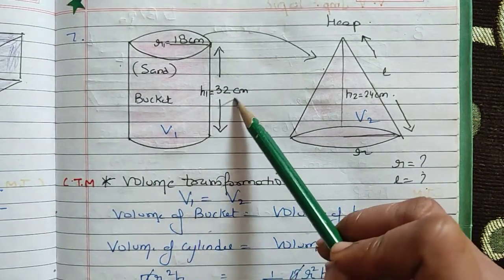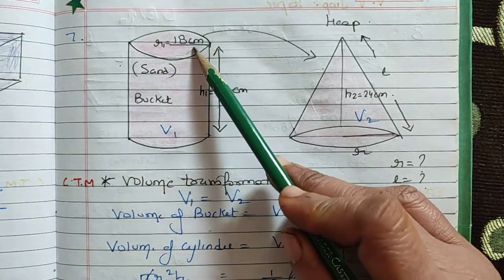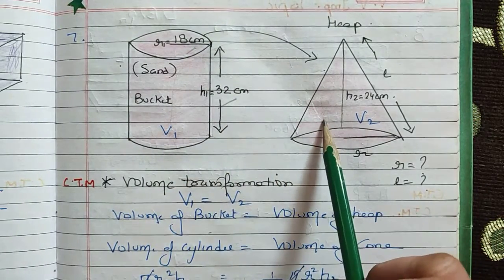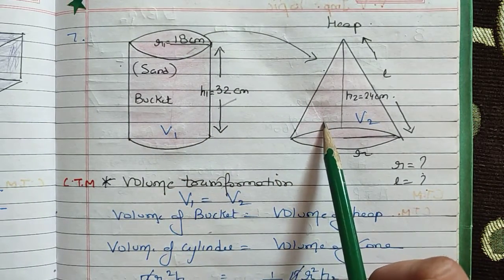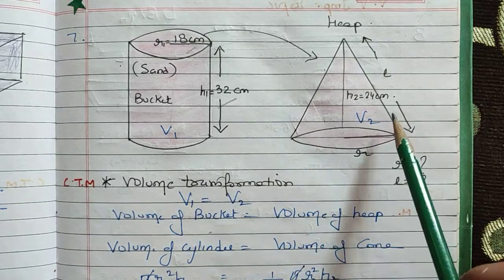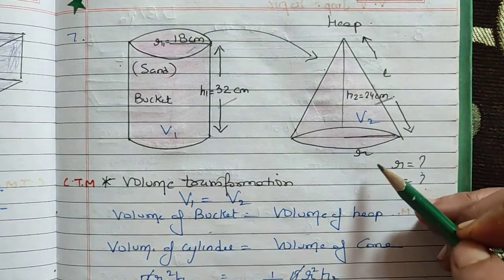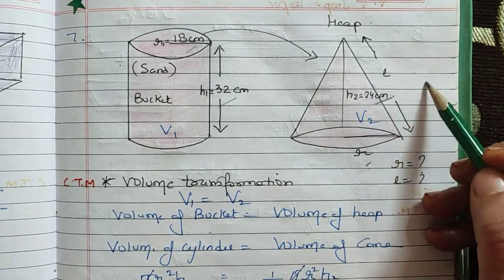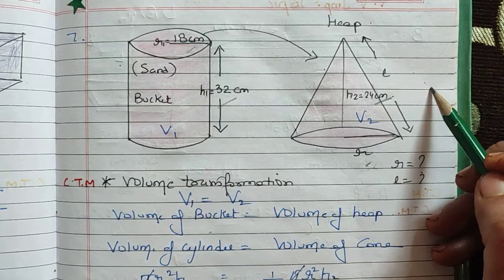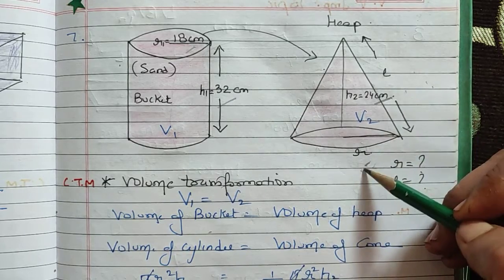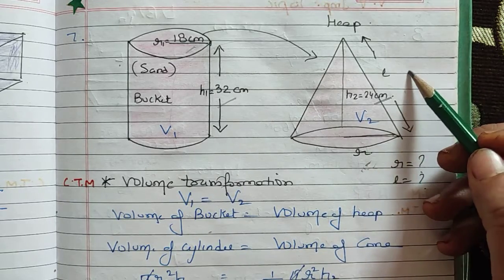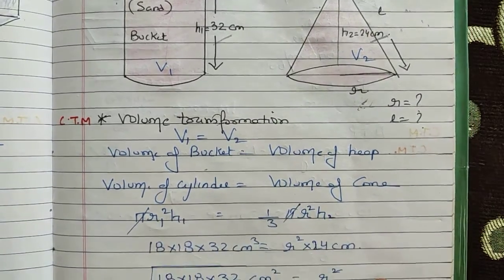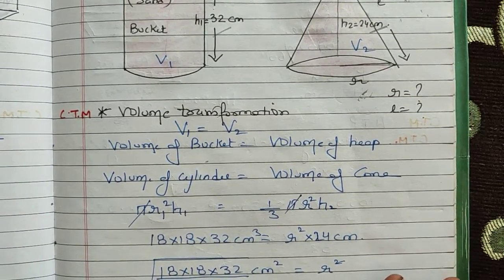We have a bucket with a known height and radius. The sand is emptied onto the ground to form the shape of a cone. We are given the height of the cone but not the radius or the slant height — we need to find both. This is a volume transformation case: the volume of the cylinder equals the volume of the cone.